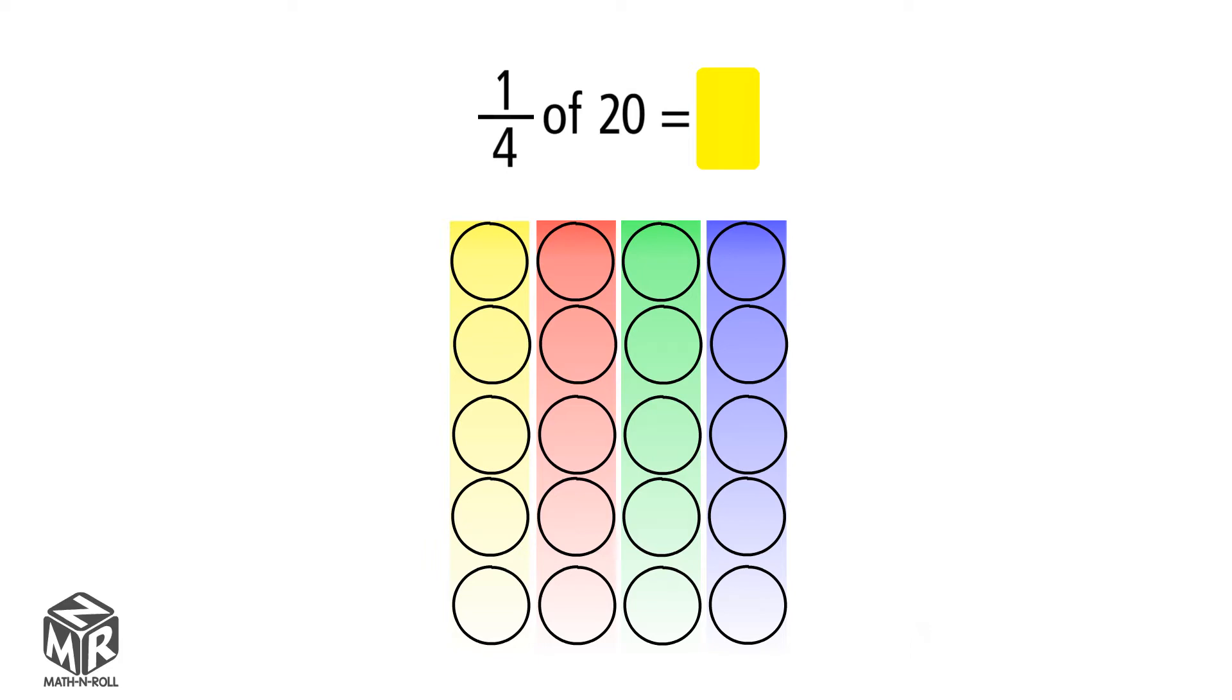Each group represents one-fourth of 20. There are five counters in one group, so one-fourth of 20 equals 5.